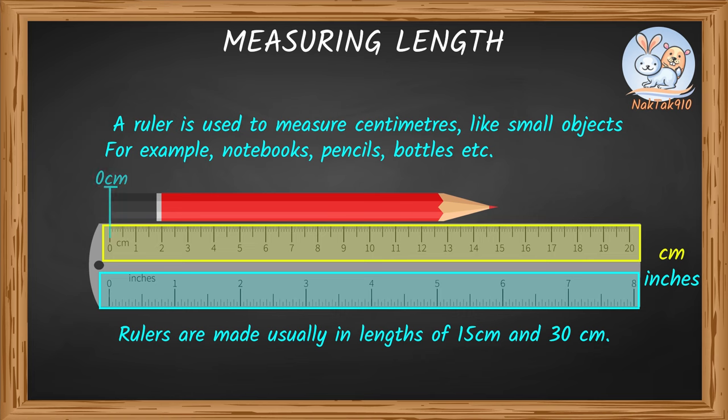Place one end of the object on the zero mark. Look at the other end of the object. Note the centimeter reading. If the reading shows 15, then it means 15 centimeters.